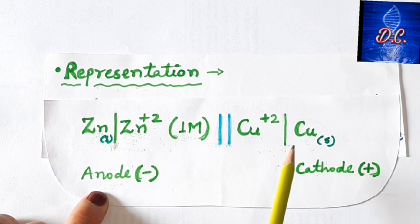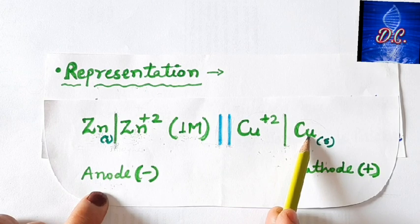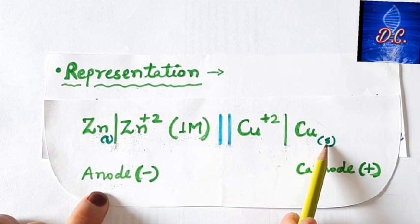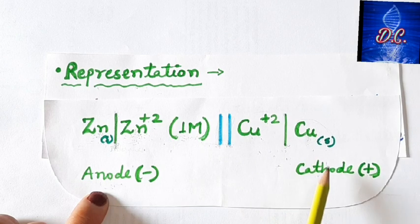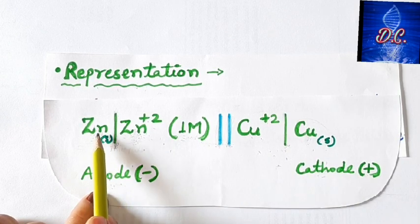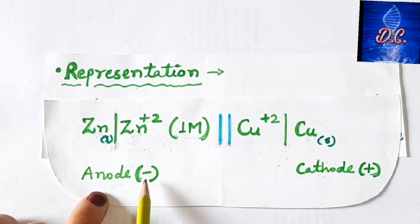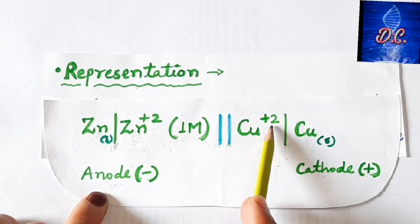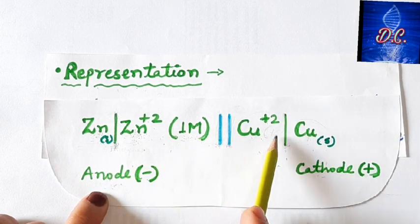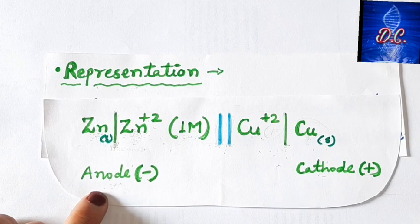For the second half cell where reduction occurs, copper ions get deposited on the copper electrode. Since it is electron-deficient, this is the cathode and positively charged. The zinc rod is negatively charged because oxidation is occurring. The complete cell representation shows: anode on the left, double vertical lines for the salt bridge, and cathode on the right with concentration in brackets. I hope this representation is clear.